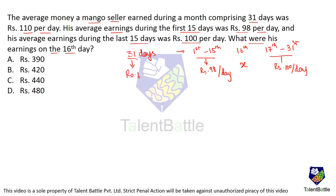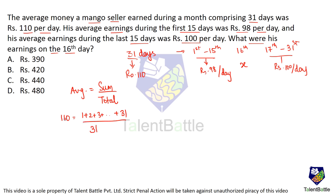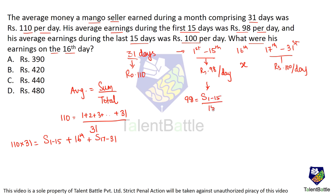The average is the summation of all observations divided by the total number of observations. For 31 days, average is 110, so total earnings = 110 × 31. This total equals the sum of earnings from day 1 to 15, plus the 16th day income x, plus the sum from day 17 to 31. The average for the first 15 days is ₹98 and for the last 15 days is ₹100.